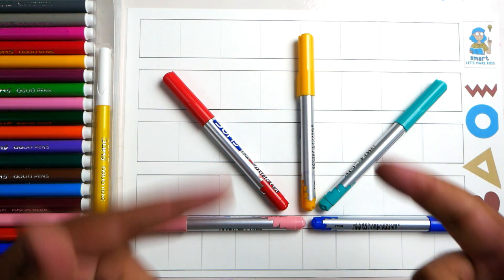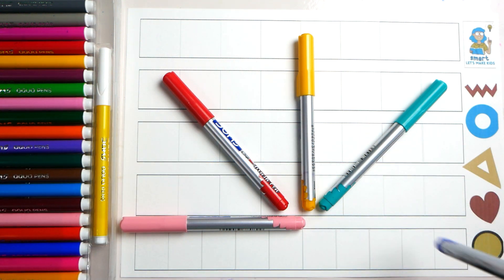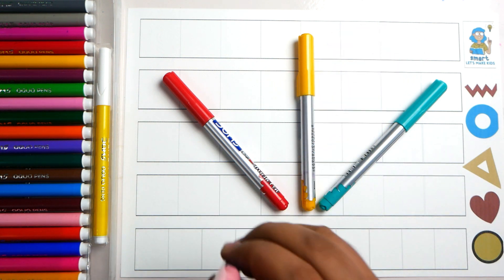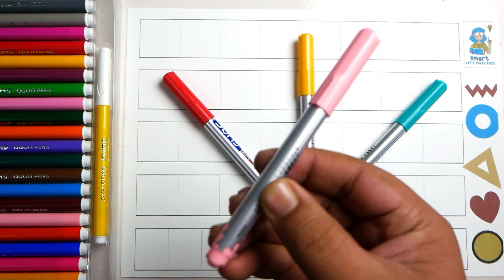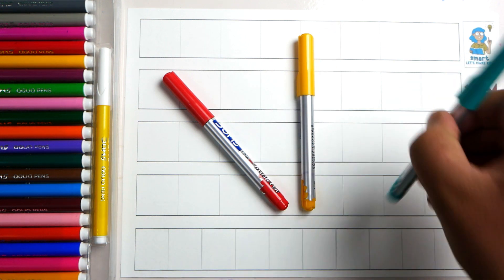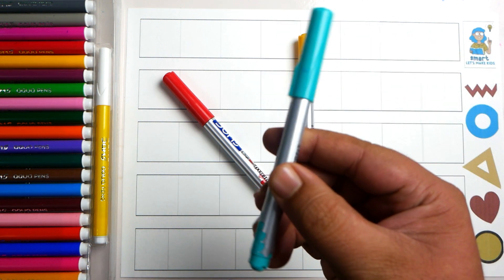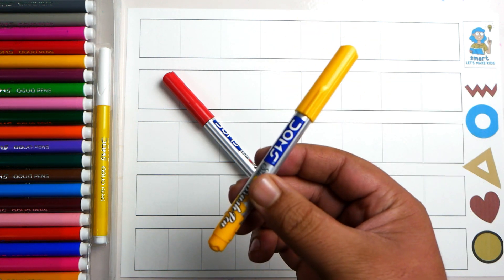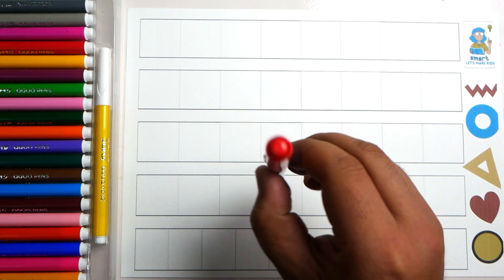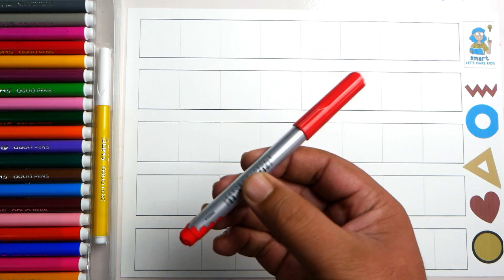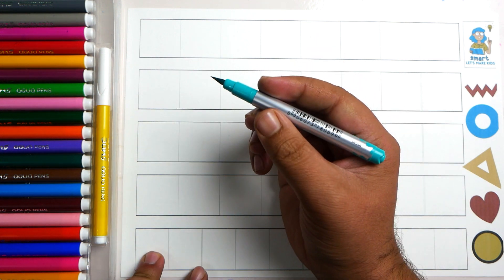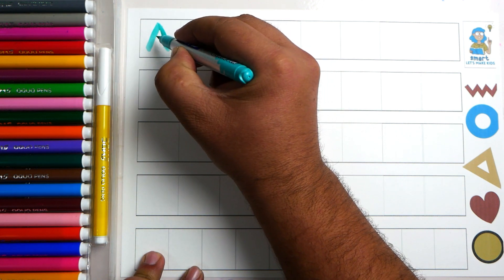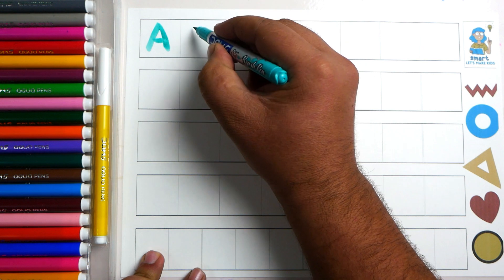Colors: blue color, pink color, sea green color, yellow color, red color, sea green color. A, A for apple. B, B for ball.